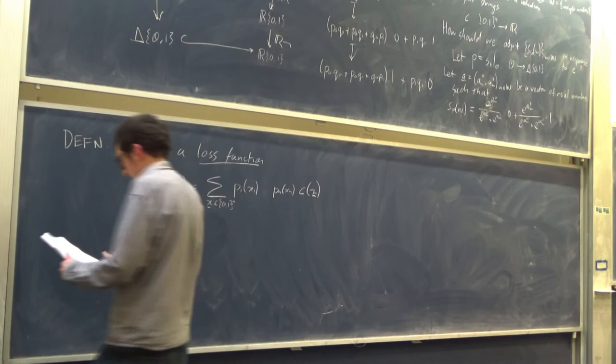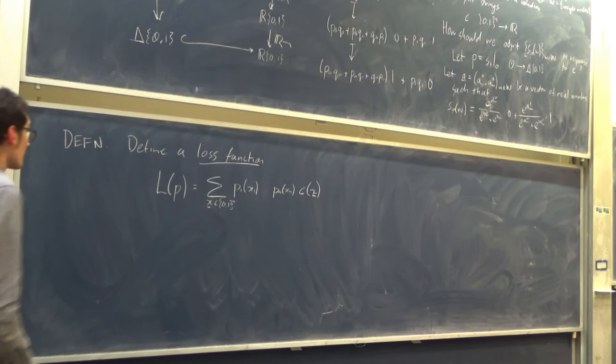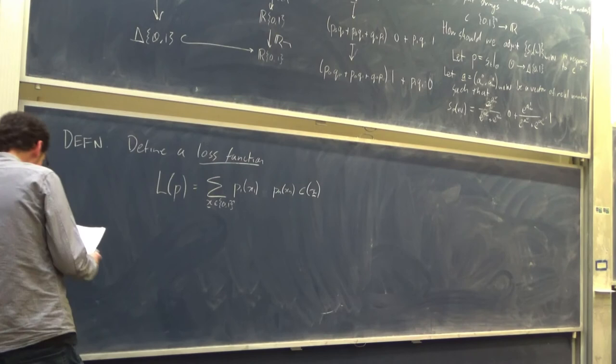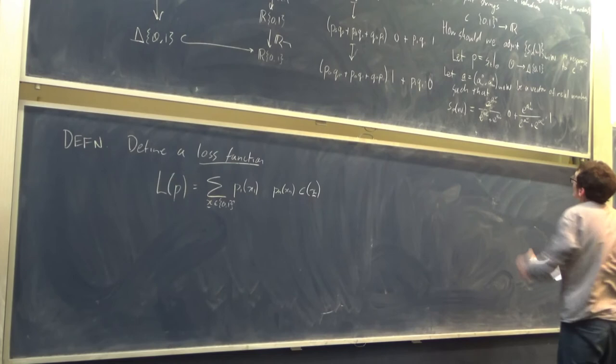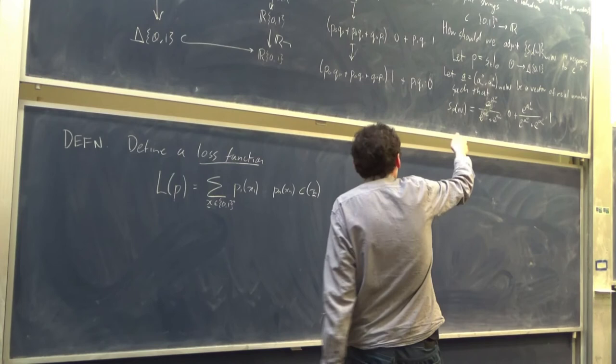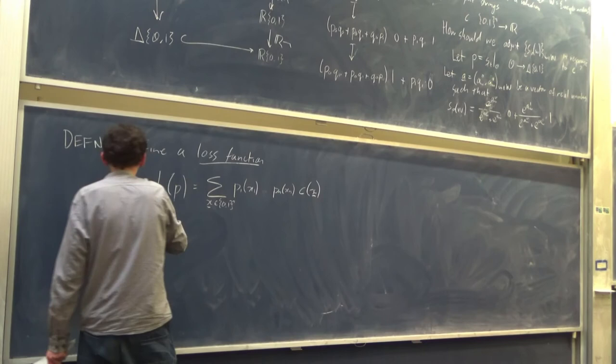The loss L is the expected value of C over all possible output strings, with respect to the particular output distribution we have at that time. Note that this is a function of p, but p is also a function of the weight vector a, because the distribution at time T depends on what the initial weights were — so indirectly, L is a function of a.